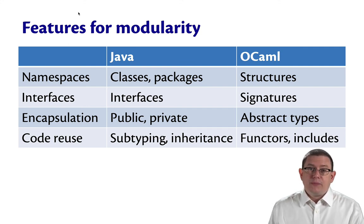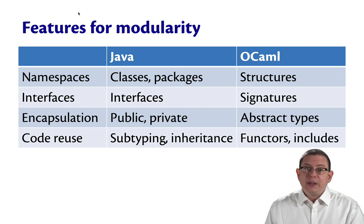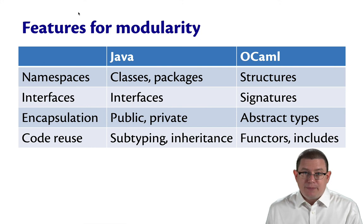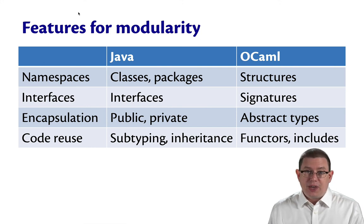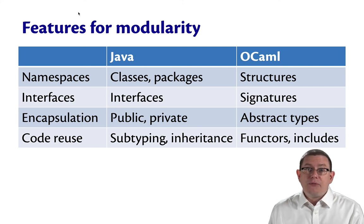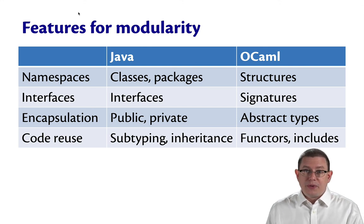Interfaces, and I'm using the term generically here, not in the specific sense of Java, are about related groups of names and specifications for those names. Those might be type specifications, those might be behavioral specifications through comments. Java provides interfaces through the very language mechanism it itself aptly names interface, which you will have seen in 2110. OCaml provides its own version of interfaces. It's called signatures. We'll learn about those soon.